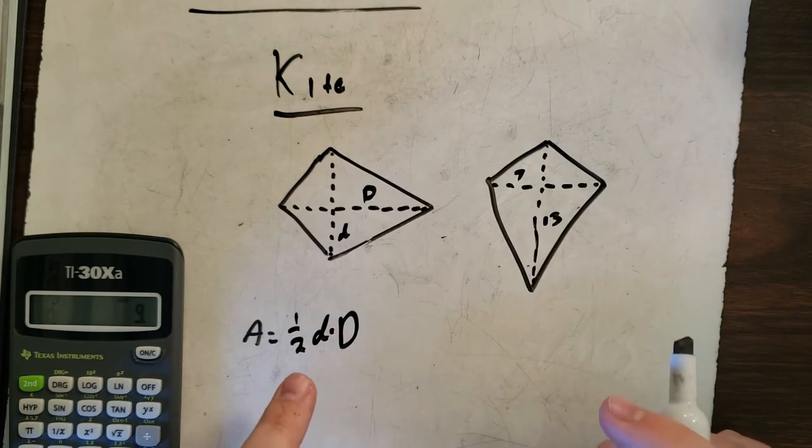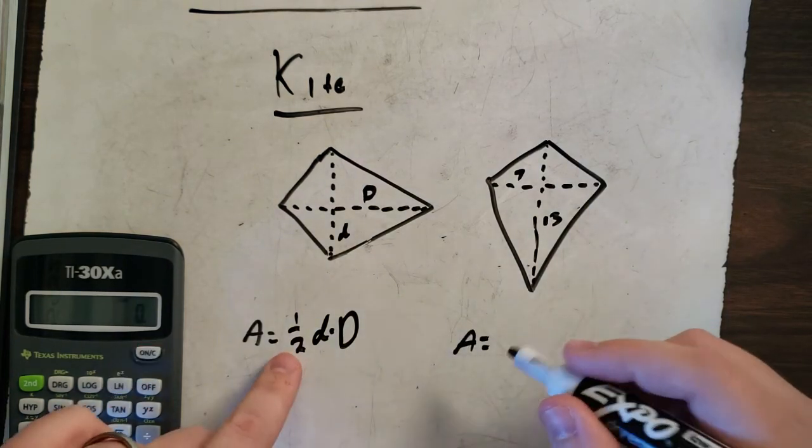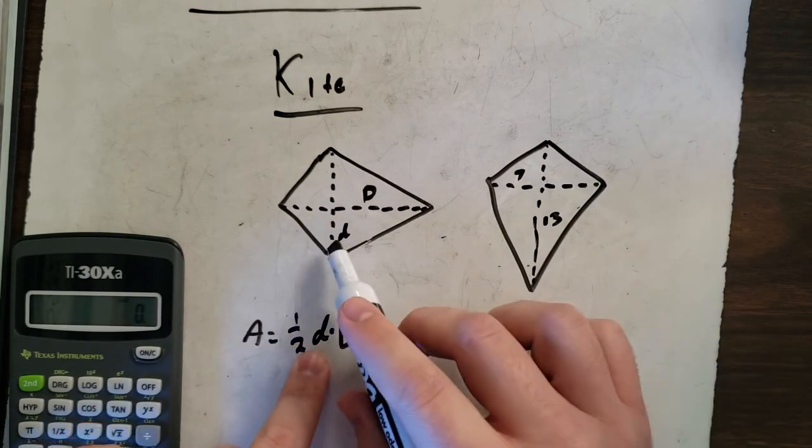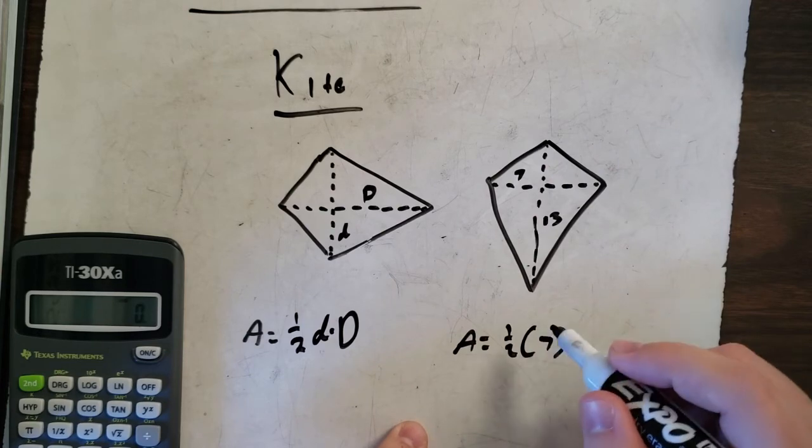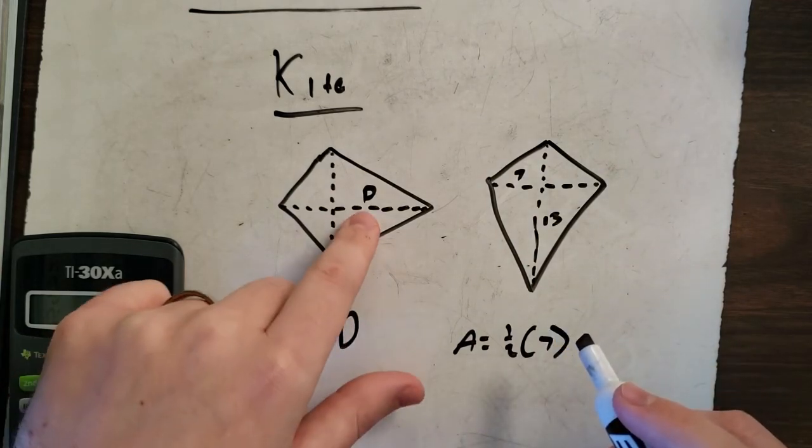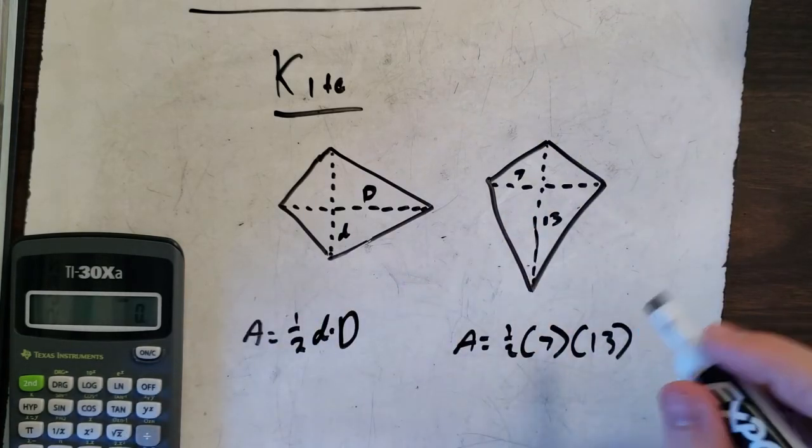So once again, plug it in. A equals 1 half times our little d. Now, the little d here is going to be the 7 here. And our uppercase D will be our longer line of 13.